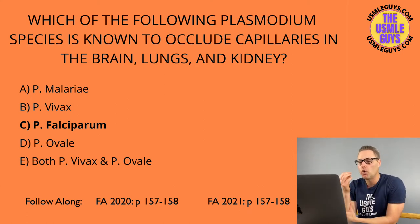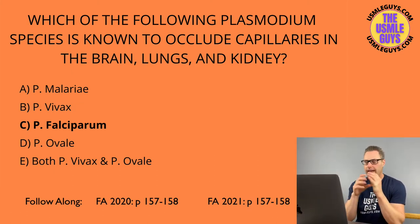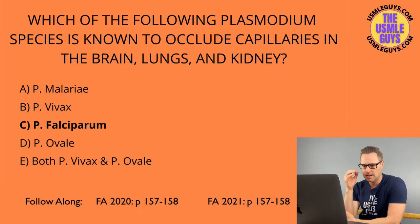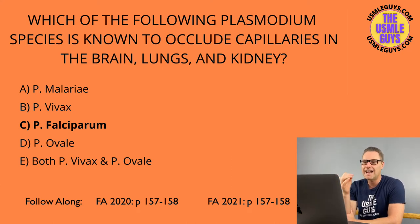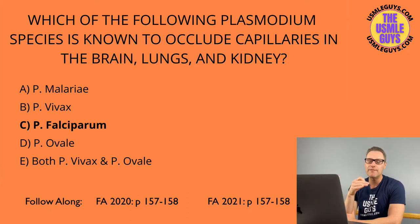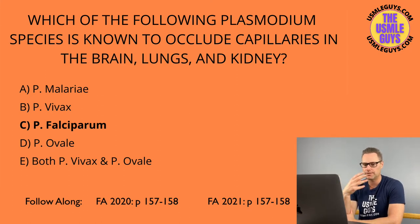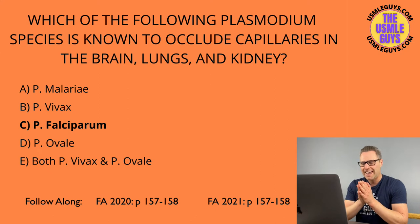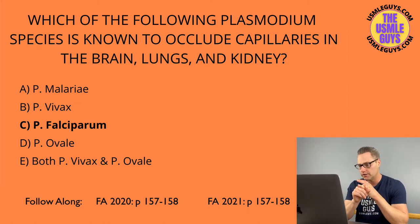Plasmodium vivax and ovale can also have a dormant form in the liver. Plasmodium falciparum is characterized by severe, irregular fever patterns and can cause cerebral malaria, caused by occlusion of capillaries in the brain by parasitized red blood cells, as well as occlusion in the lungs and kidneys. Plasmodium malariae is characterized by a 72-hour cycle of symptoms. On blood smear, we see a trophozoite ring form within the red blood cells, a schizont containing merozoites, and red granules throughout the red blood cell cytoplasm in ovale and vivax — known as Schüffner stippling.